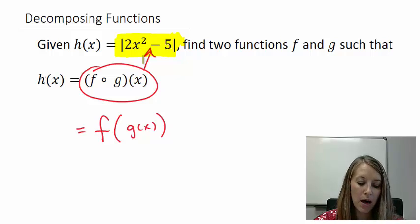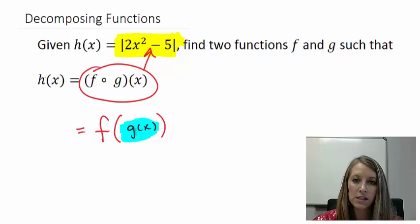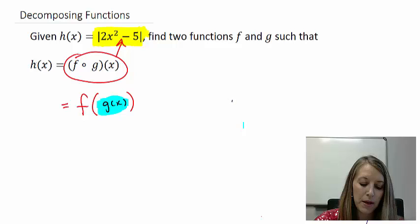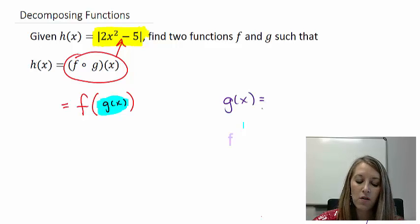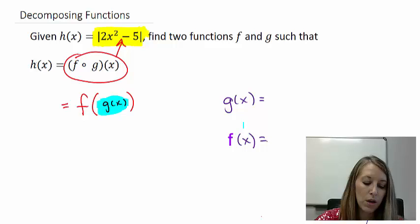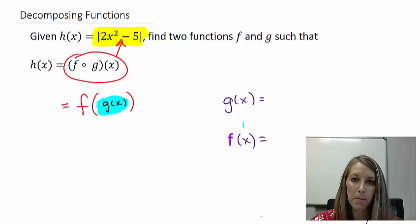Now, the easiest way for me to explain this is the way I've written it here. Notice my g of x looks like it is inside my f of x function. So that's the way I suggest that you think about it. I want you to pick out an inside piece of my yellow expression up here, absolute value of 2x squared minus 5, and then whatever is left over will be your outside piece.